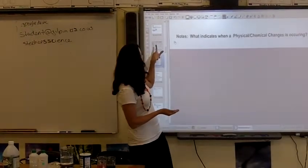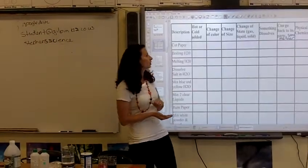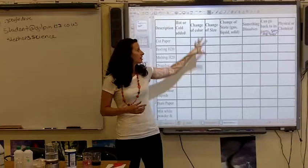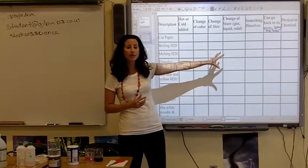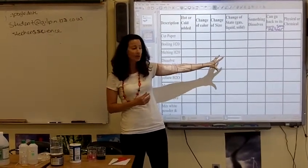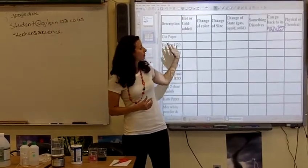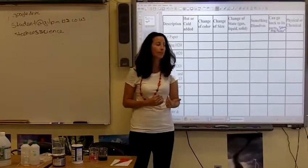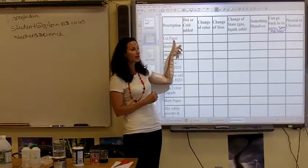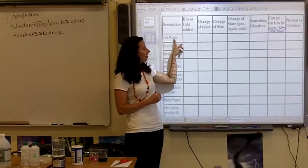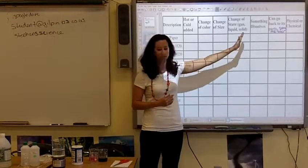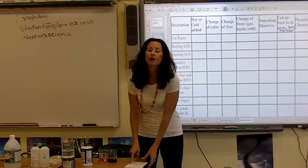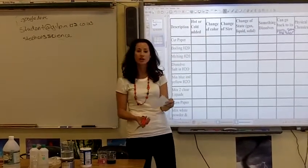Instead of doing Cornell notes, you're going to use a worksheet that's on my website and also available in class. You'll be filling it out based on the video you're watching today. The first demo is cutting paper, and then we're going to ask ourselves some questions so you can come up with rules on whether a physical or chemical change is occurring.